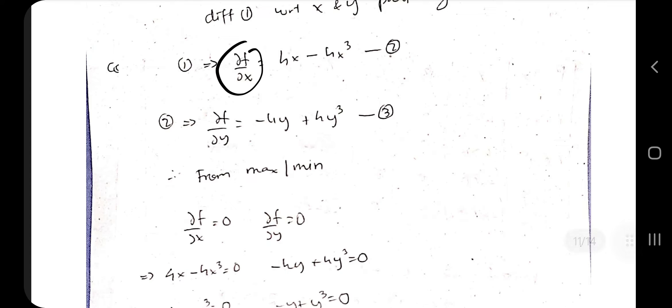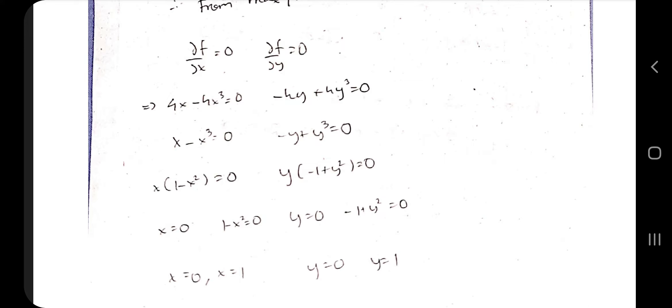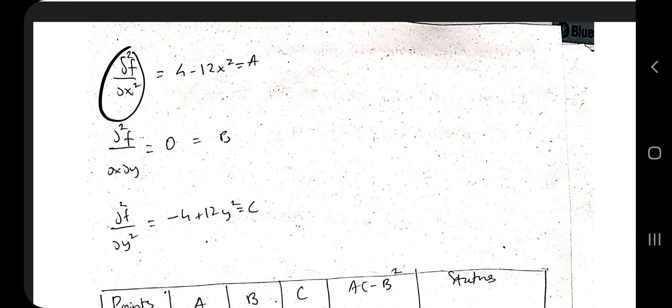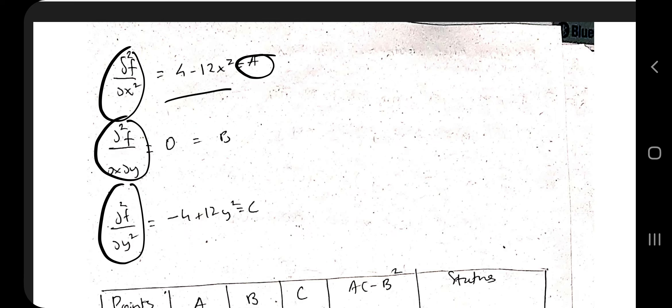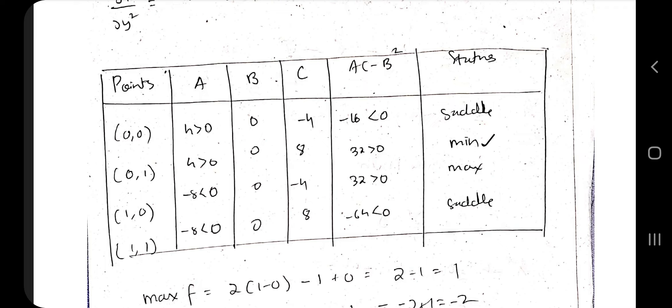Coming to maxima and minima for two variables: find the extreme points of f(x, y) = 2(x²−y²) − x⁴+y⁴. Partially differentiate with respect to x and y, giving ∂f/∂x and ∂f/∂y. Set ∂f/∂x = 0 and ∂f/∂y = 0. Substituting: 4x − 4x³ = 0 and −4y + 4y³ = 0, giving x = 0, 1 and y = 0, 1. The extreme points are (0,0), (0,1), (1,0), and (1,1). Then compute A = ∂²f/∂x², B = ∂²f/∂x∂y, and C = ∂²f/∂y².